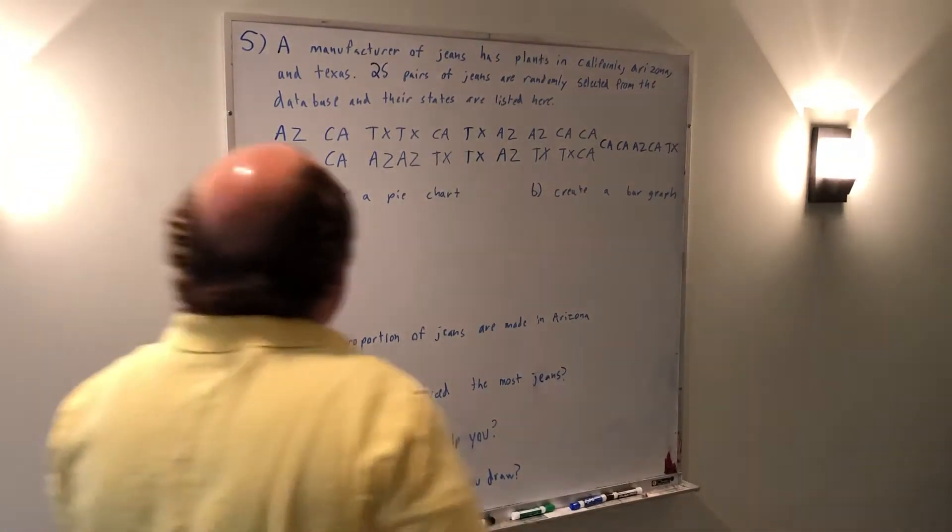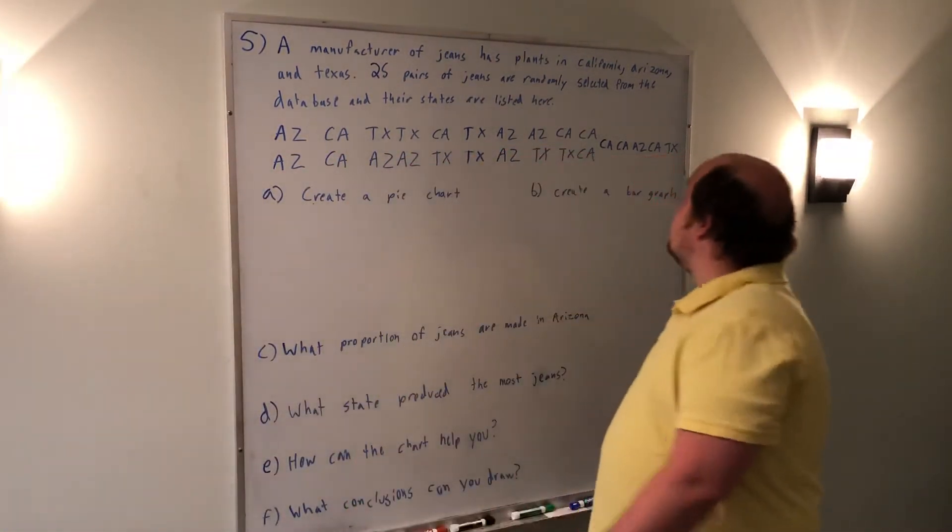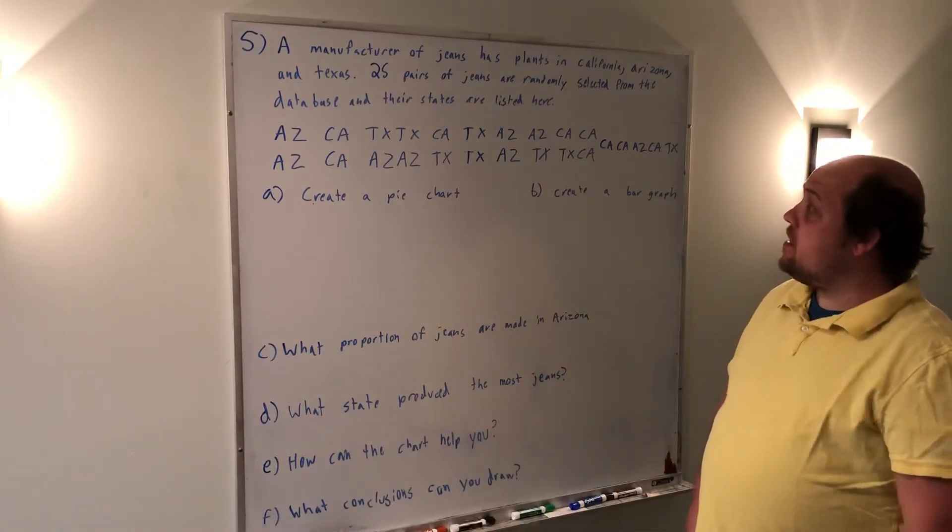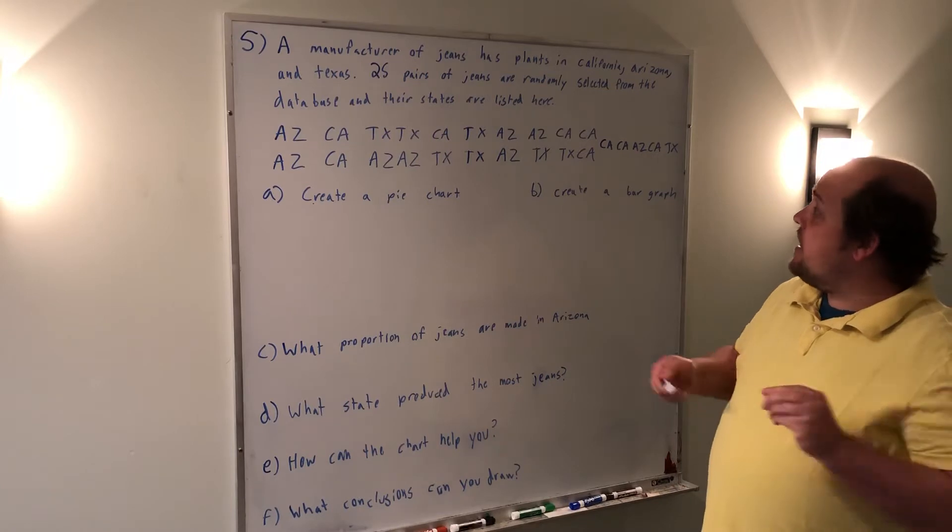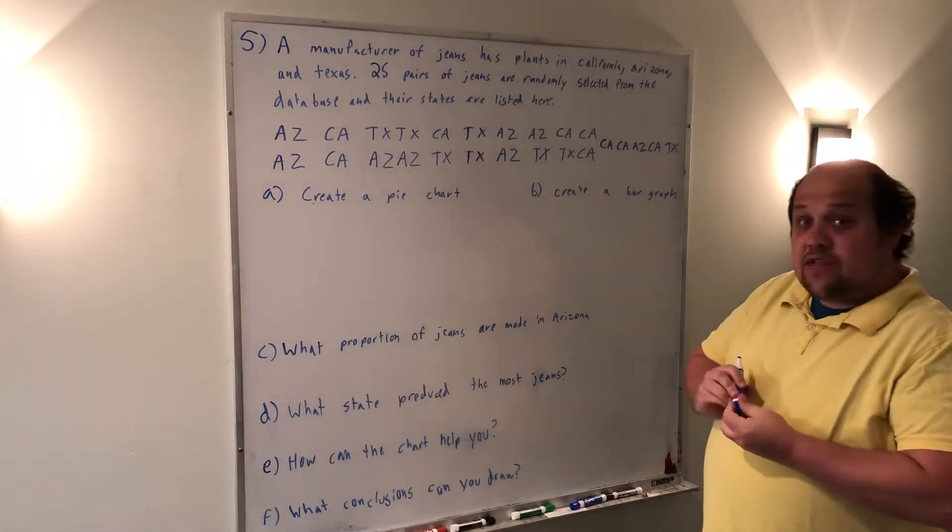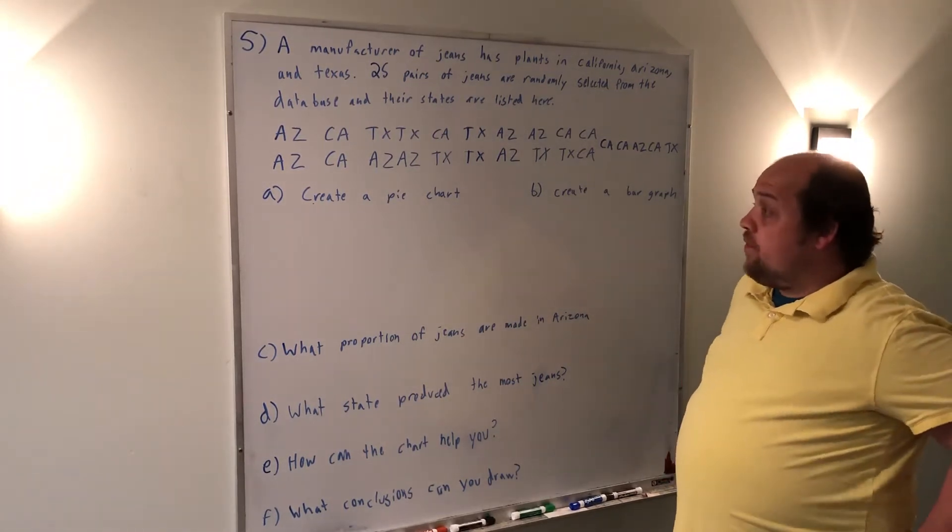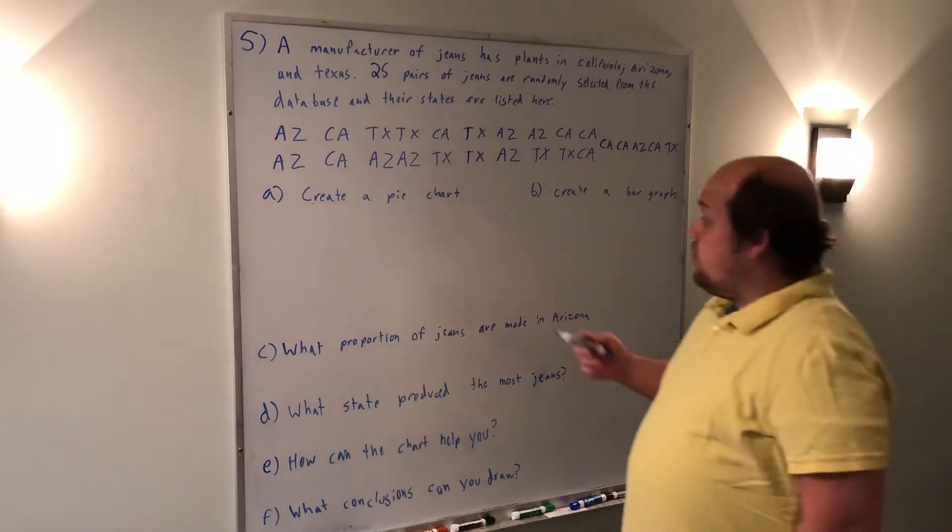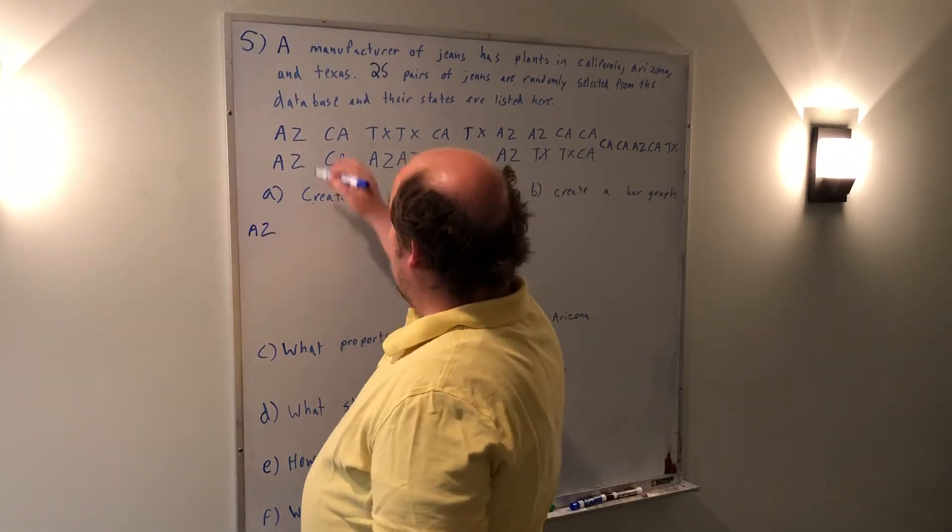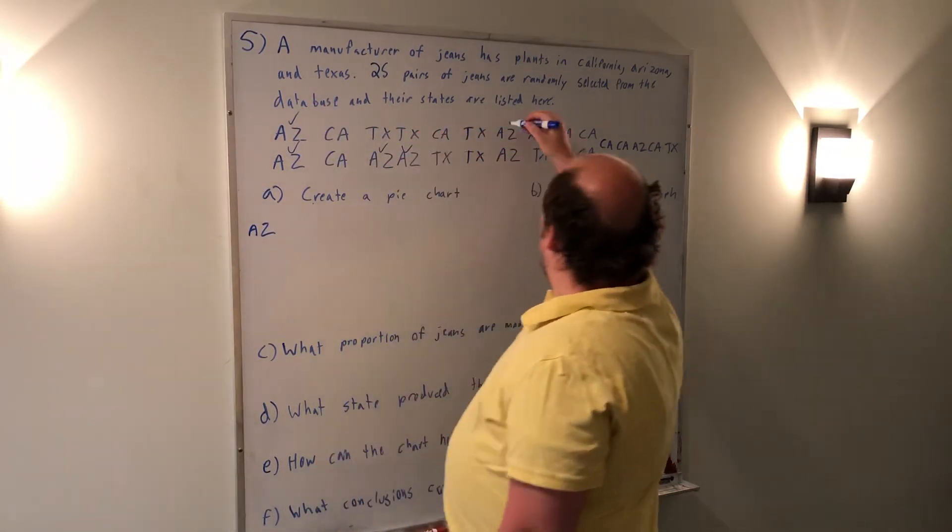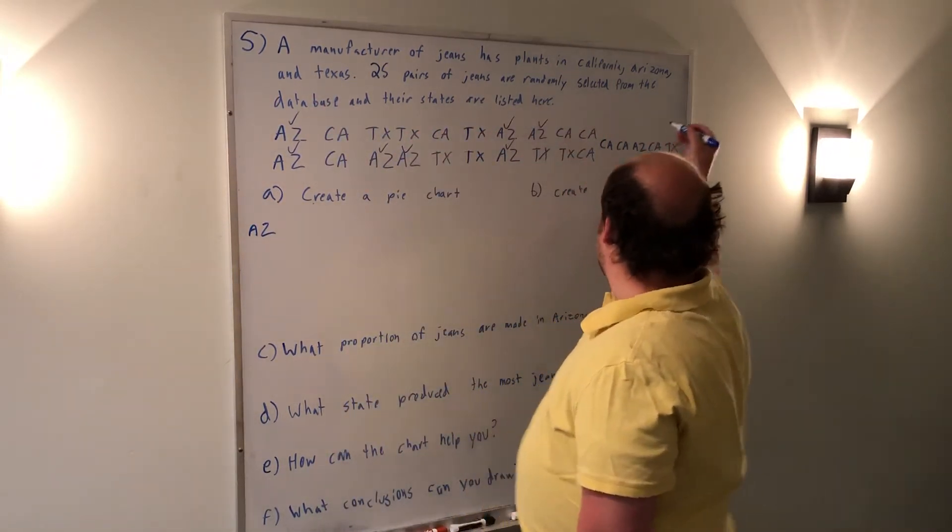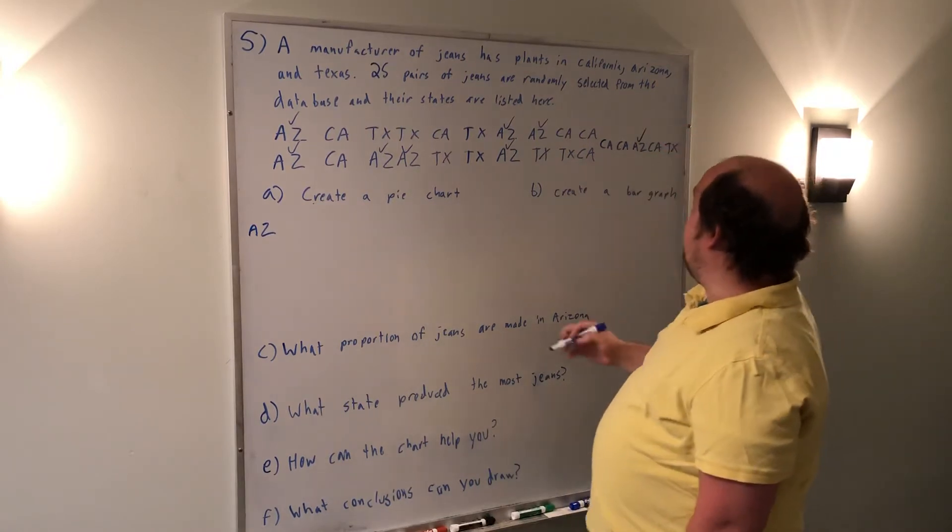For PREP-15, we're told that a manufacturer of jeans has plants in California, Arizona, and Texas. 25 pairs of jeans are randomly selected from the database, and their states are listed here. So the first thing that we want to do is count up and find the frequency of each state. So I'm going to start with Arizona. 1, 2, 3, 4, 5, 6, 7, 8 from Arizona.